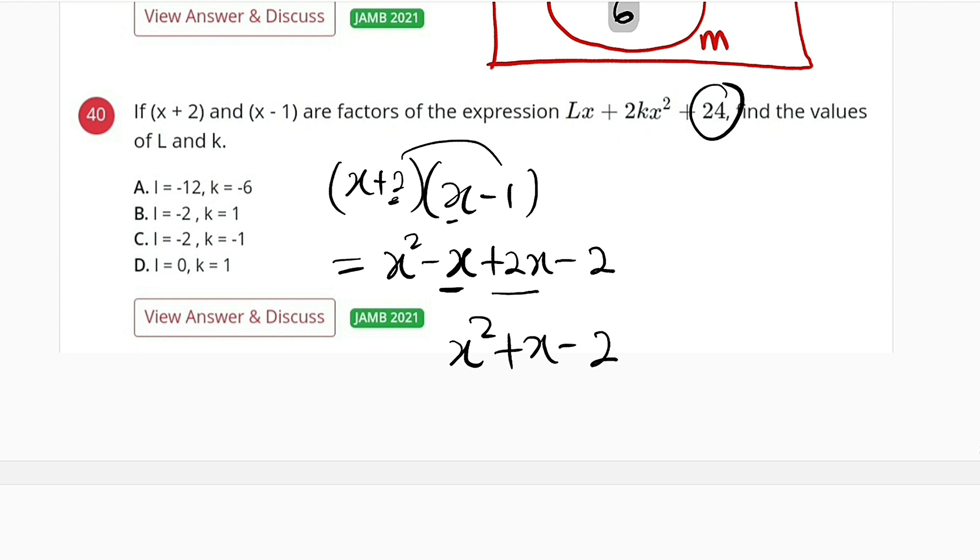But look at the constant here is positive 24, while the constant here is negative 2. To make it equivalent, we can multiply this by negative 12. So we are going to multiply this expression by negative 12.